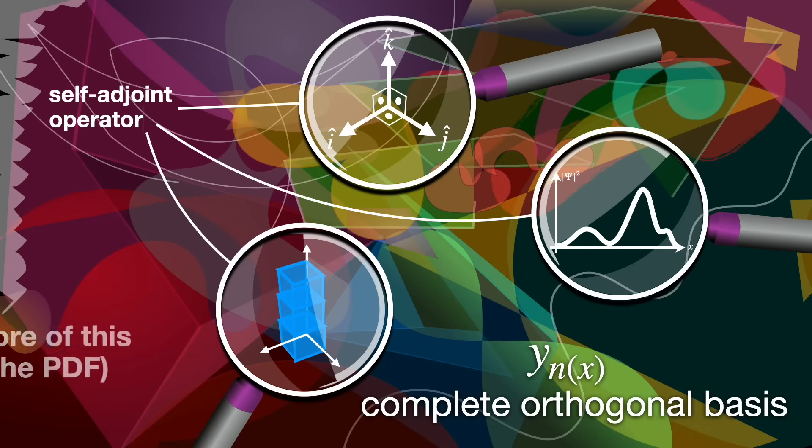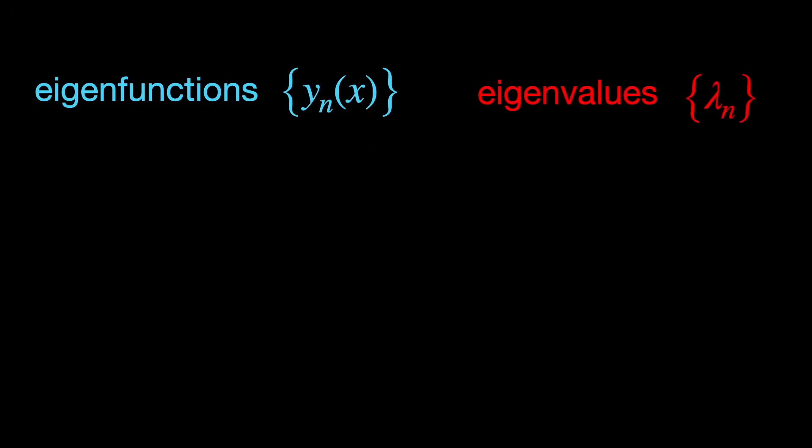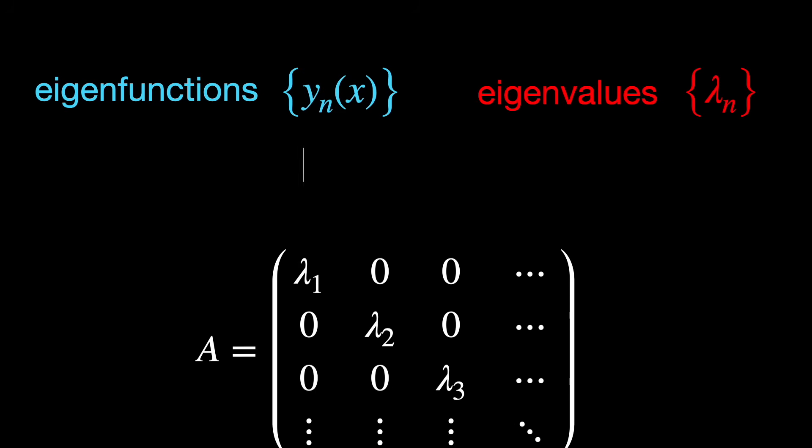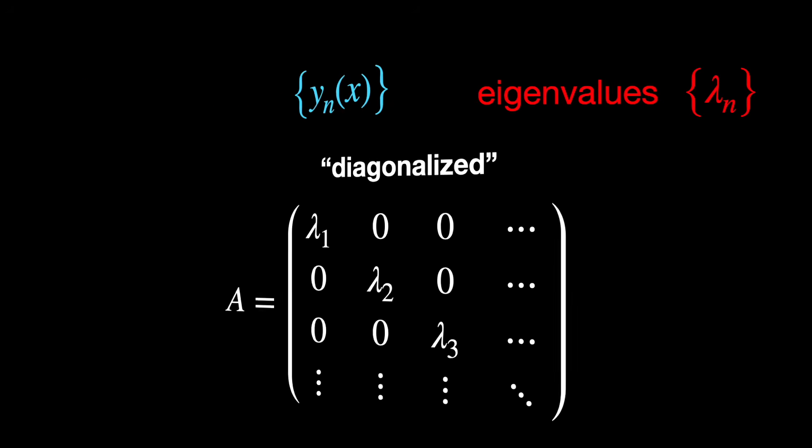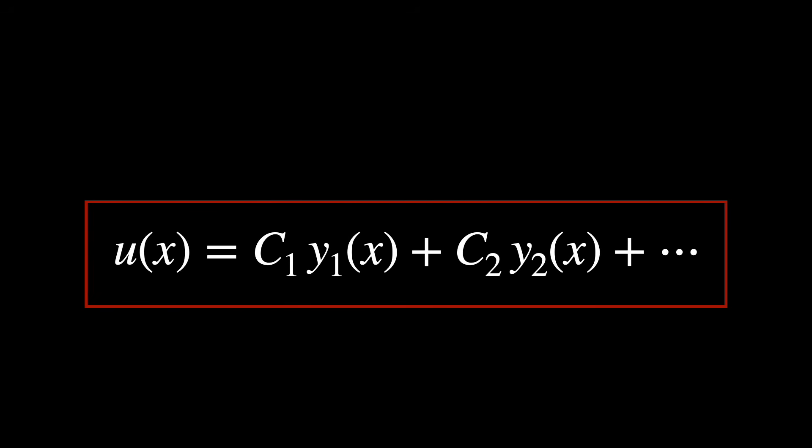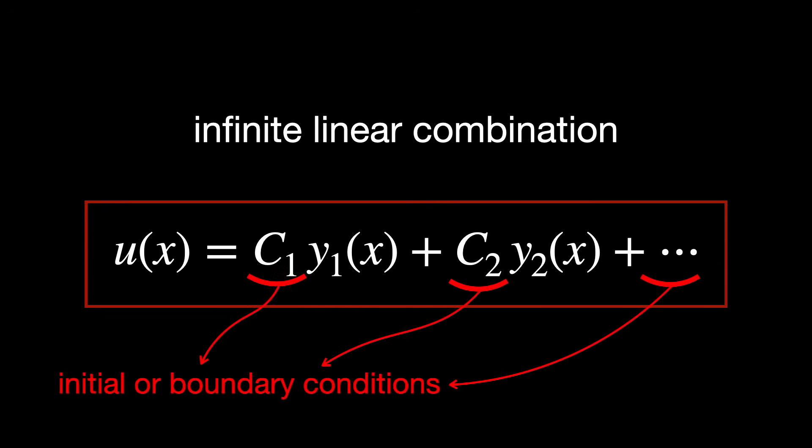The eigenfunctions yn form a complete orthogonal basis in the infinite-dimensional Hilbert space they live in. So here's the real power of the Sturm-Liouville theory. Once you've found the eigenfunctions yn and eigenvalues lambda n of the self-adjoint operator A, you've essentially diagonalized the operator. And since these eigenfunctions form an orthogonal basis for the Hilbert space of solutions, we can express any solution u of x of a wide range of differential equations, including partial differential equations, as an infinite linear combination of these eigenfunctions, where each coefficient c depends on the initial or boundary conditions.